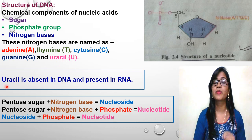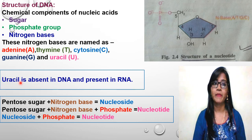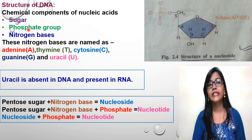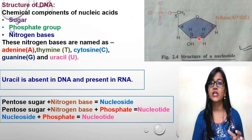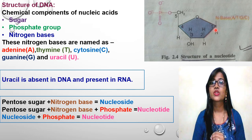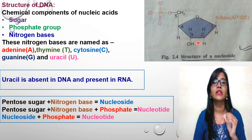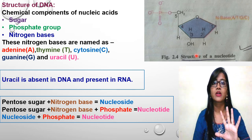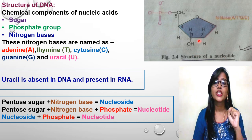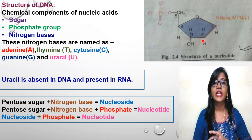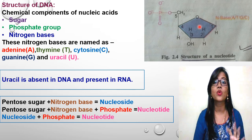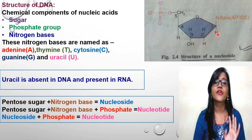The sugar in a nucleotide is a pentose sugar — pentose means 5 — a 5-carbon containing sugar. Counting the carbons: 1, 2, 3, 4, and 5. It is a pentose sugar called deoxyribose or ribose — a 5-carbon compound with a pentagonal ring structure. The second component is the phosphate group, which is actually phosphoric acid. It has three active OH (hydroxyl) groups, of which two are involved in strand formation.